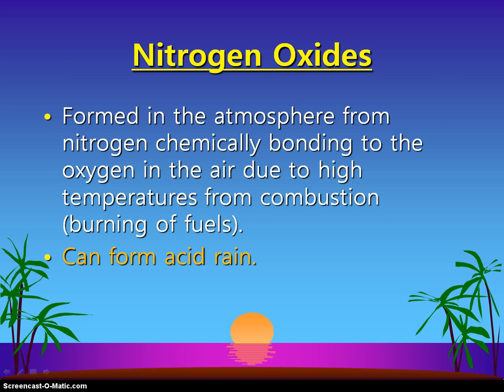Nitrogen oxides and sulfur oxides are next. If nitrogen or sulfur mixes with water in the atmosphere, it forms nitric acid or sulfuric acid respectively. When these mix with clouds and moisture in the atmosphere, it comes down as acid rain. So acid rain is going to be a topic we get to as well.